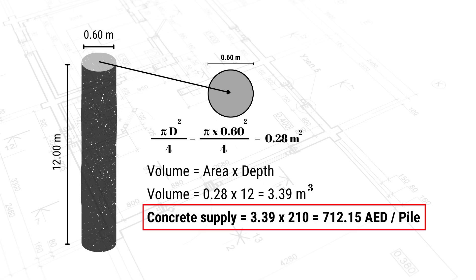If the rate for concrete supply is 210 dirhams per cubic meter, then the cost of concrete supply equals the volume of 3.39 multiplied by 210, which gives 712 dirhams per pile. This is the concrete cost for one pile.